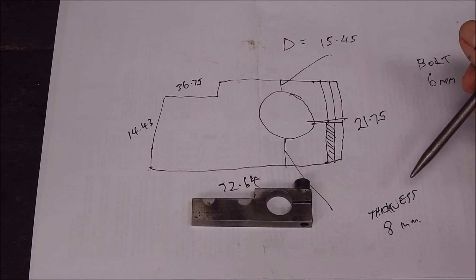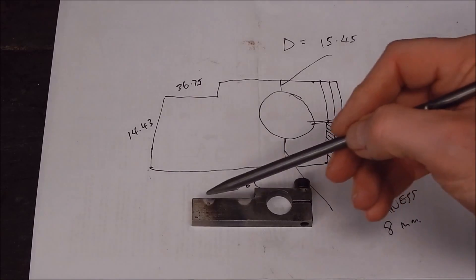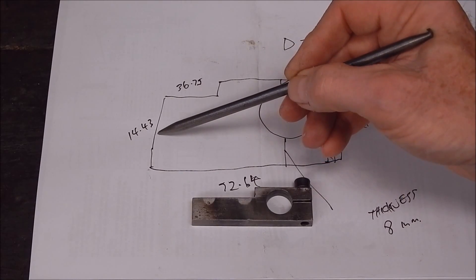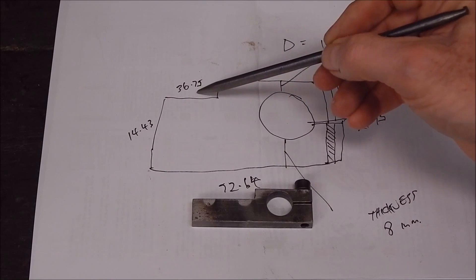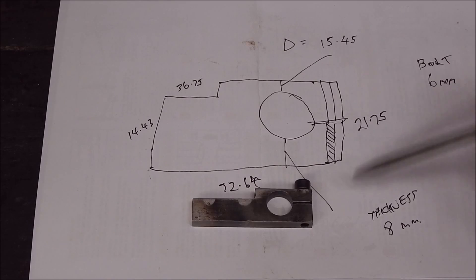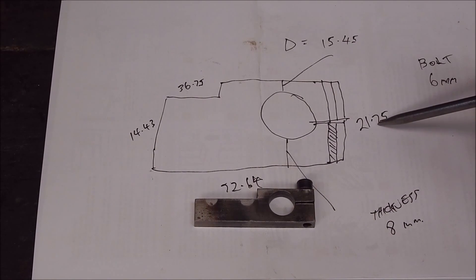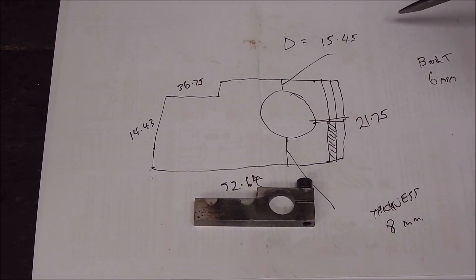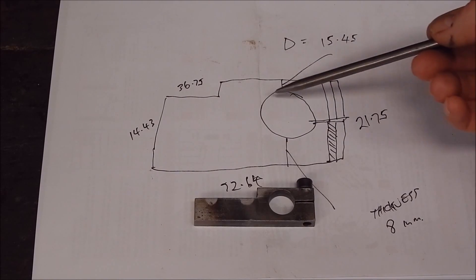Looking at the measurements: across the bottom the full length of mine is 72.64mm. The depth of the section that goes into the tool post mount is 14.43mm. The length that goes into the tool post, you know, four-way on mine is 36.75mm, and you take that from that and you'll get this section here. The depth of this thing is 21.75mm and the hole diameter is 15.45mm.